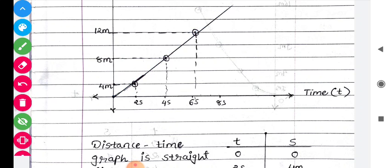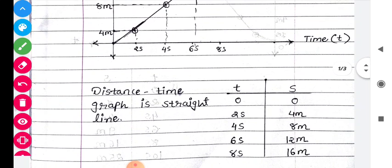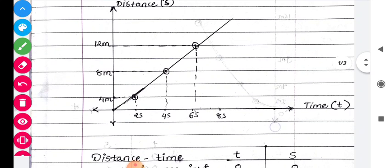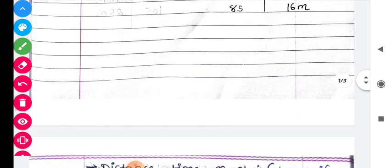So the ultimate conclusion behind this graph: the distance-time graph is a straight line when we take the motion as uniform. If we take motion as uniform motion, then the graph is a straight line.